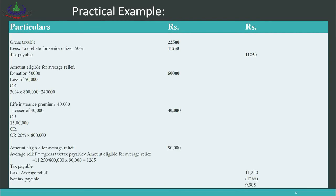Total amount eligible for average relief = rupees 50,000 (donation) + rupees 40,000 (life insurance) = rupees 90,000. Average relief formula: (Gross Tax ÷ Taxable Income) × Amount Eligible for Average Relief = (11,250 ÷ 8,00,000) × 90,000 = rupees 1,265. Net tax payable: 11,250 − 1,265 = rupees 9,985 (approximately rupees 9,950 as shown). This example clarifies how to calculate rebates and tax credits for a person. More practice examples are available in the book.